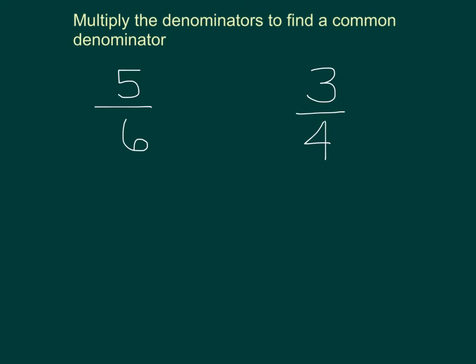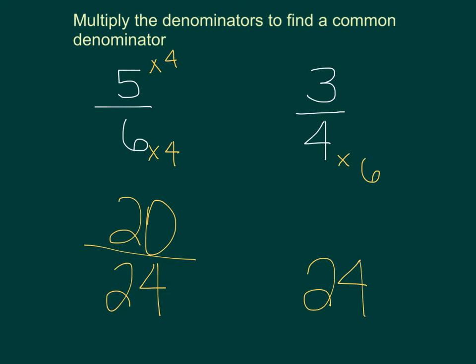When you're trying to find a common denominator, you can also just multiply the denominators by each other to find the common number. So you could multiply 6 by 4 to get 24. Whatever you do to the bottom, you have to do to the top. So that would become 20. You could multiply the 4 by the 6 and get 24, and then multiply the top by 6 and get 18. And so now you would have 20 twenty-fourths and 18 twenty-fourths, which would still get you the same symbol that 18 twenty-fourths is less than 20 twenty-fourths.